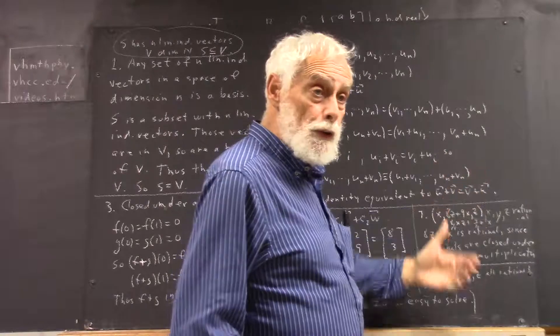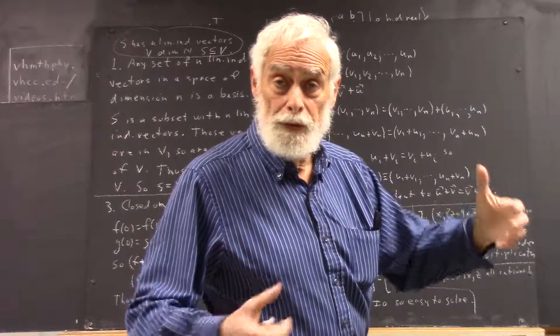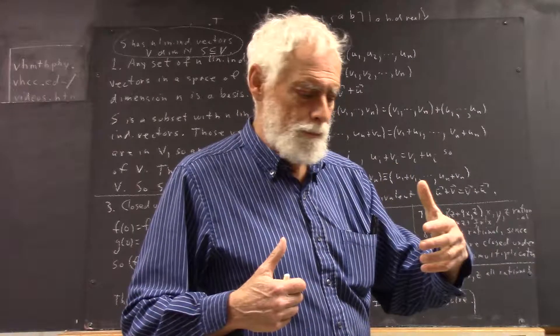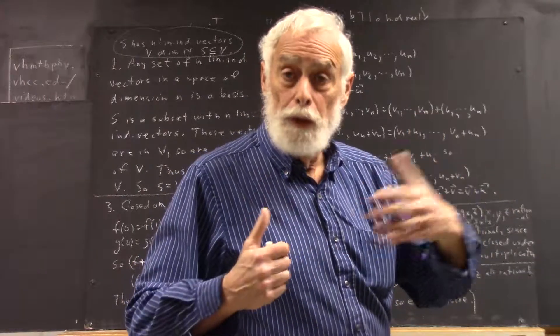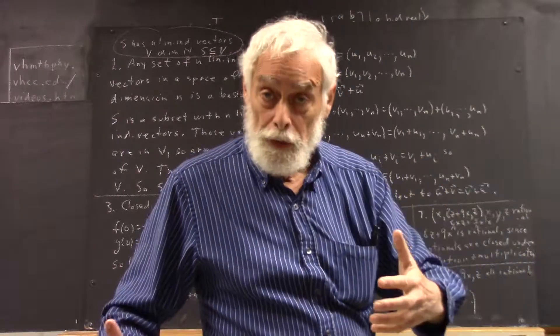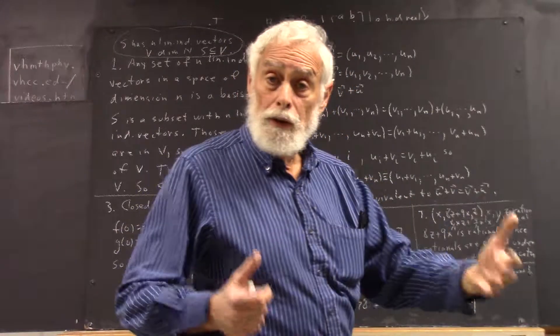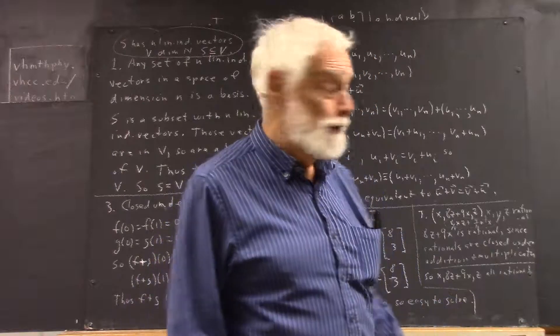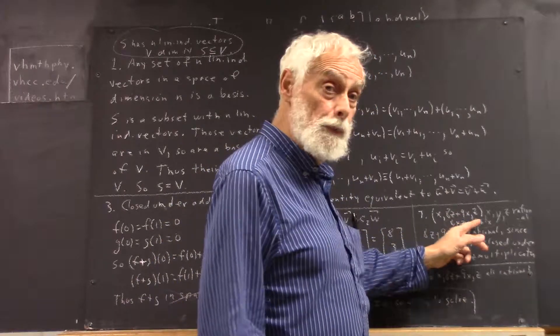And we want to show that this is a member of the space of vectors with three components, all rational. You might have to read the definition of that space to understand that that's what I just said, but the bottom line is that the three components all have to be rational.